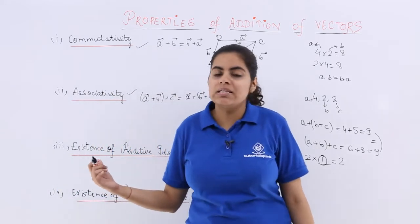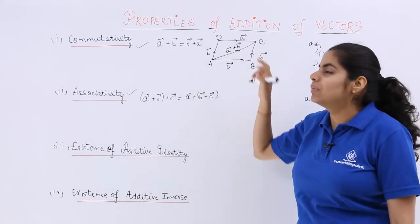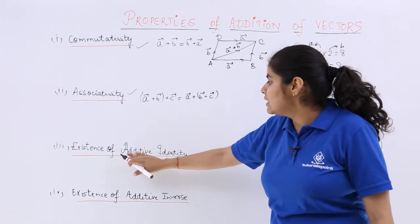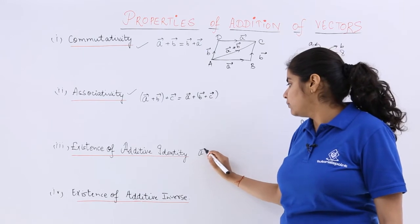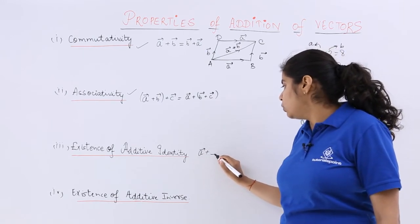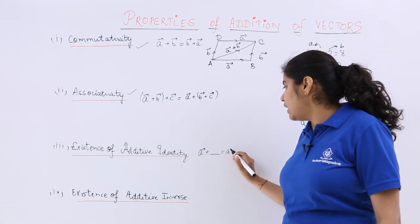Similarly here, since it is not the case of multiplication but addition. So what is the additive identity in case of addition? So if I have A vector and what should be added to A vector to give me back A vector?